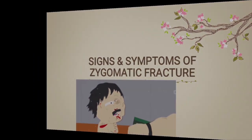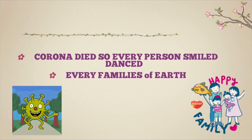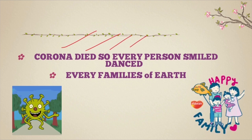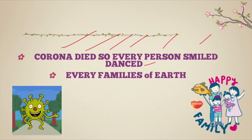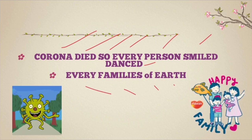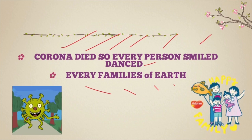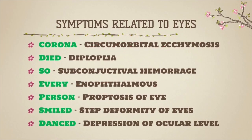I've used some mnemonics for you to remember. This mnemonic is divided into two parts. First part: 'Corona died, so every person smile, dance.' Second part: 'every family is off earth.' The first part deals with symptoms related to the eyes, and the second part covers all other symptoms.